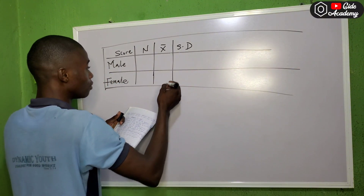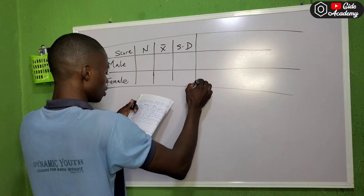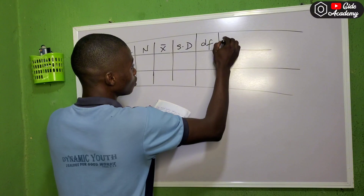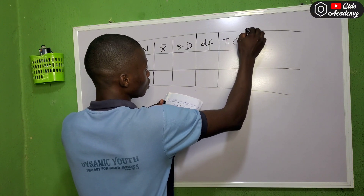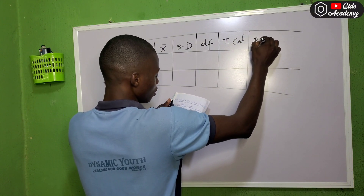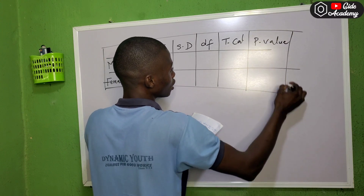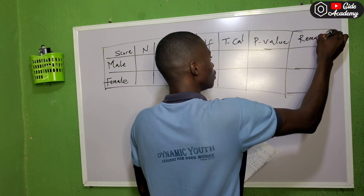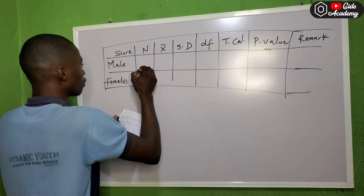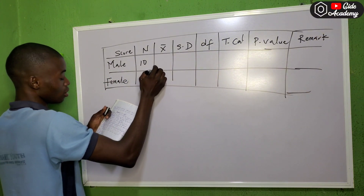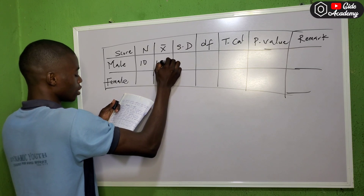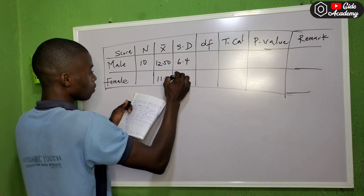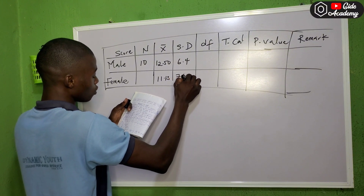We have the df which is degree of freedom, we have the t-calculated, then we have the p-value. Then lastly you have the remark. For the numbers, we have 10 here, 12.50, 11.13, 6.4, 7.64.